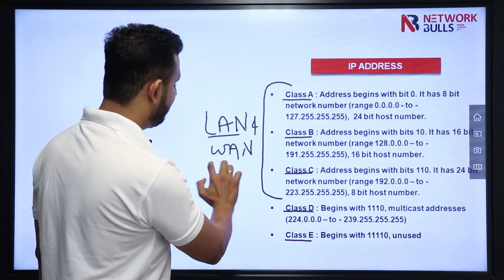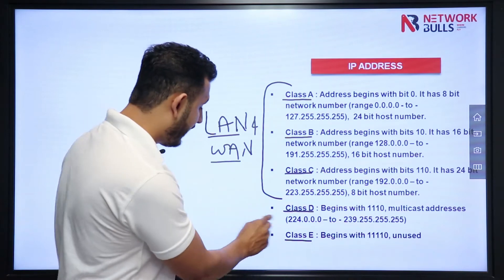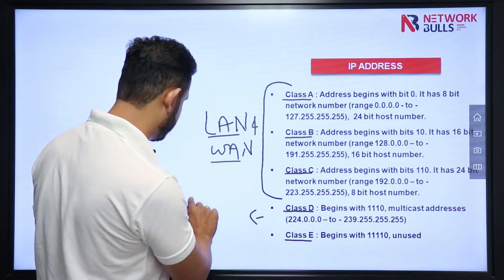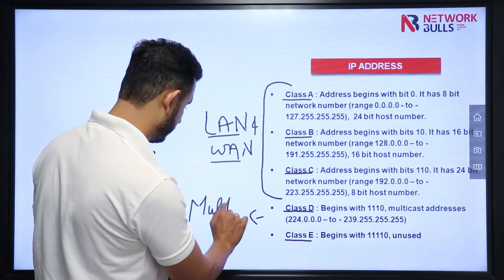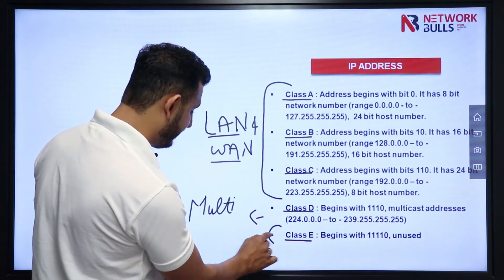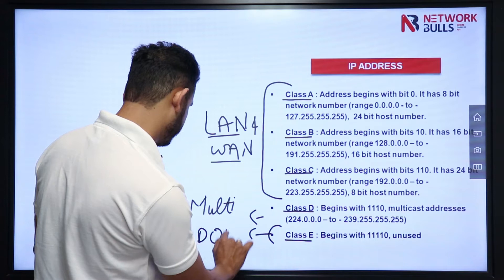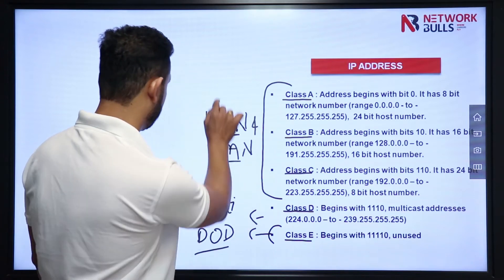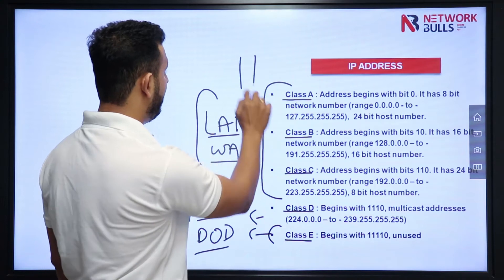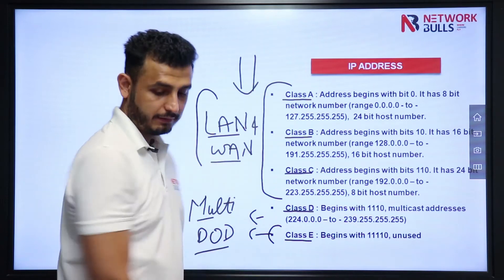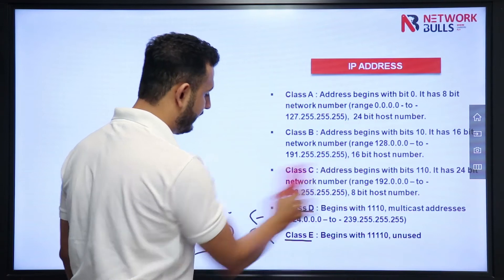LAN stands for Local Area Network and WAN stands for Wide Area Network. Class D is used for multicast, and Class E is used by the DOD. We will concentrate on Class A, B, and C — the IP addresses used in LAN and WAN networks.